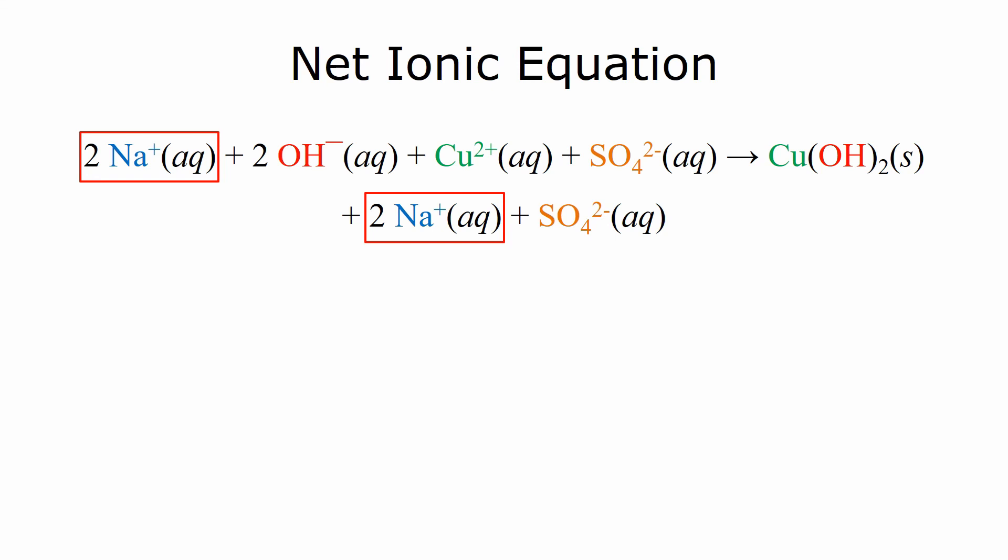They didn't actually do anything. So if you have a species on both sides of the reaction arrow that are the exact same state of matter, the exact same form, the exact same charge, these are what's known as spectator ions. They didn't actually do anything. And that also includes sulfate.